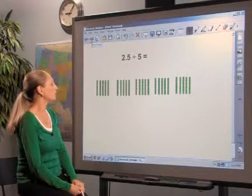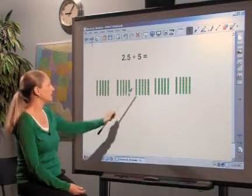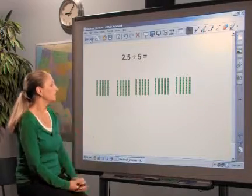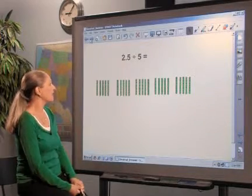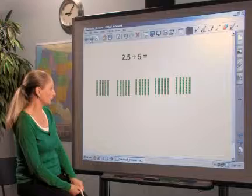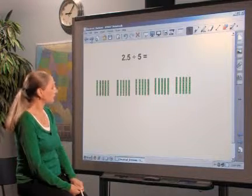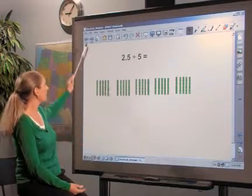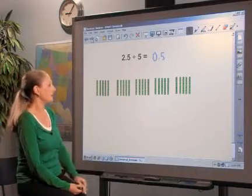Have students form 5 equal-sized groups. Students can then determine that there are 5 tenths in each group. So, 2 and 5 tenths divided by 5 is 5 tenths.